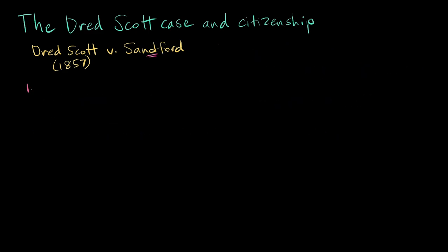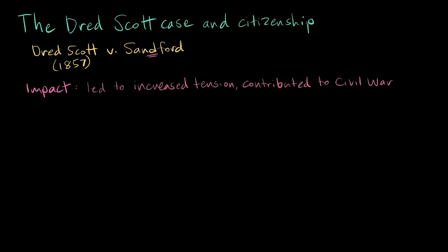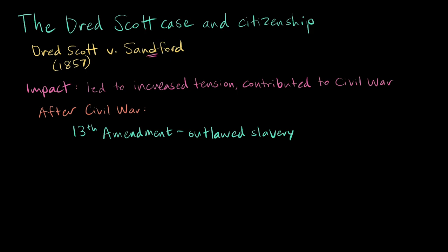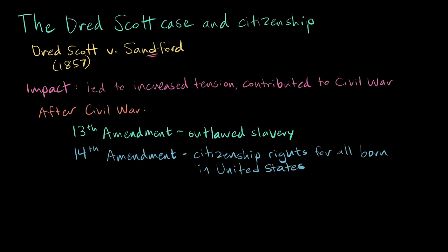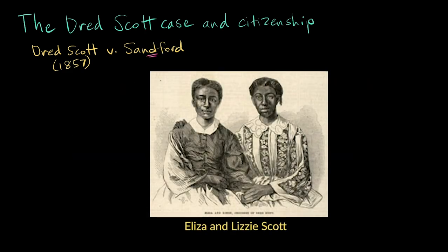The Supreme Court thought this decision would settle the question of slavery's spread to the West for good, but it completely backfired. Tensions between North and South reached a fever pitch, Abraham Lincoln gained a national following through his arguments against the case, and eventually civil war erupted when Lincoln became president. After the Civil War, two new amendments undid the Dred Scott decision: the 13th Amendment, which abolished slavery, and the 14th Amendment, which guaranteed citizenship rights for all people born in the United States. Although Dred Scott lost his case, just two months later he did get his freedom — though he died just a year after that. His wife Harriet and two daughters survived to see the end of slavery and the 14th Amendment, and his great-great-grandchildren are alive today.